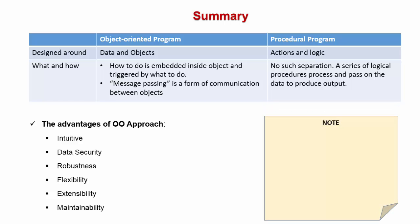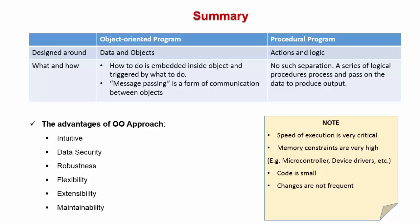Note that when the speed of execution is very crucial, memory constraints are very high, like in microcontroller or device driver programming, where the code is small and changes are not so frequent. Procedural code is recommended. This is because object-oriented code comes with extra memory requirement and they are little slower than the procedural code. However, this can be neglected very well when compared with gained advantages especially when the processor and RAM availability on a general purpose operating system are not a constraint anymore.